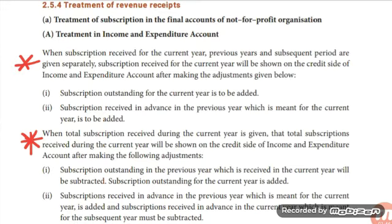When subscription received for the current year, previous year, and subsequent period are given separately, the subscription received for the current year will be shown on the credit side of the income and expenditure account. After making adjustments: subscription outstanding for the current year is to be added, and subscription received in advance in the previous year which is meant for the current year is also to be added.